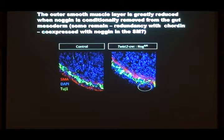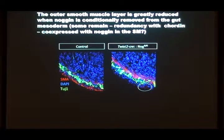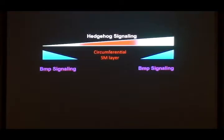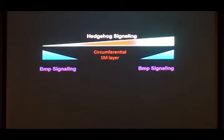In addition to Noggin, the layer of smooth muscle produces other BMP antagonists as well, including Chordin and Gremlin. We think there's some redundancy there, and if you got rid of all the BMP antagonists made by this layer, you wouldn't get any subsequent layers at all. So we think we understand how you get the layers forming sequentially.